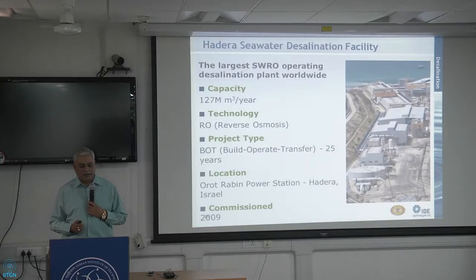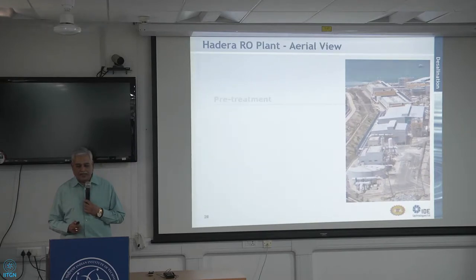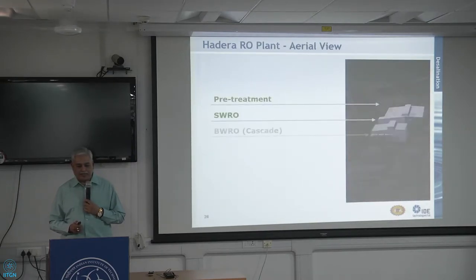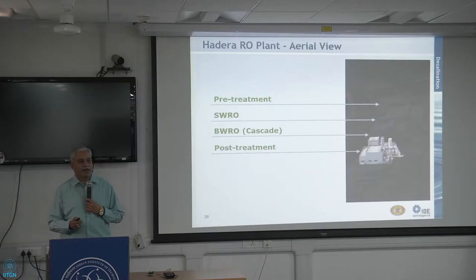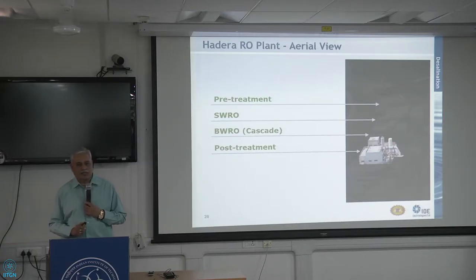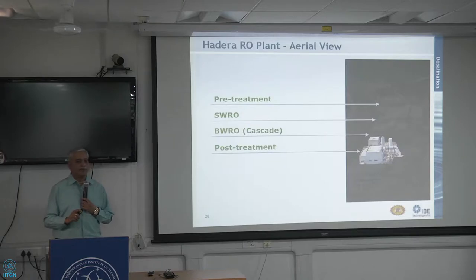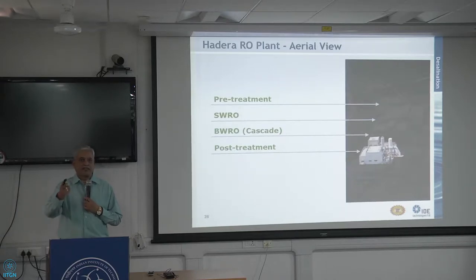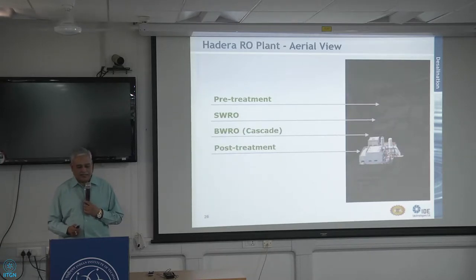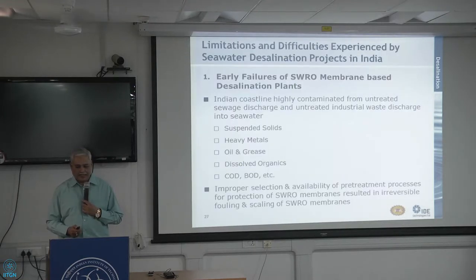This is among the world's largest SWRO plants, operating at almost 500 MLD in Hadera, Israel. The functional blocks include a pre-treatment building, an SWRO building, and a second-stage brackish water RO. Seawater has about 40,000 ppm TDS; one stage of SWRO reduces it to around 400 ppm. To further reduce to around 100 ppm — typical of river water — a second-stage brackish water RO is required. There is also post-treatment and a product water tank.